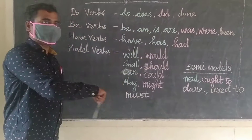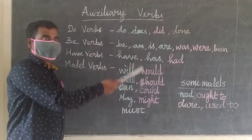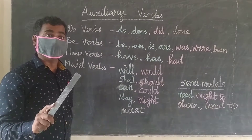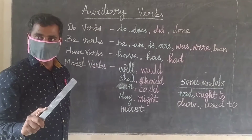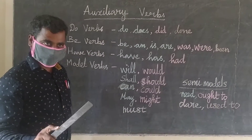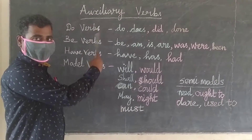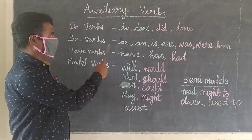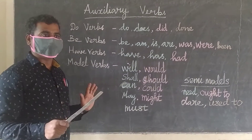These are all auxiliary verbs. How many auxiliary verbs are there in English? There are 27 auxiliary verbs in English.